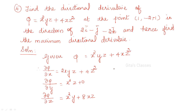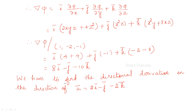Next: find the directional derivative of phi = x²yz + 4xz² at the point (1, −2, −1) in the direction of 2i − j − 2k, and hence find the maximum directional derivative. Always remember: del phi dot a-cap gives the directional derivative of phi along the direction of vector a. Find del phi as usual.